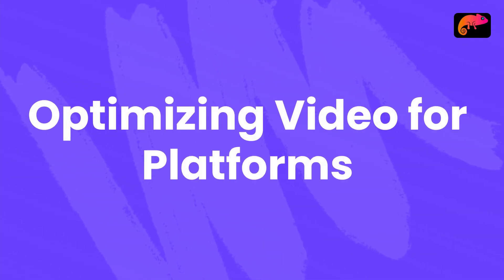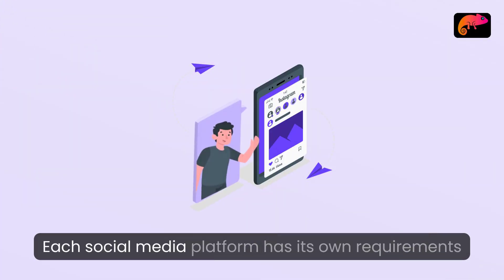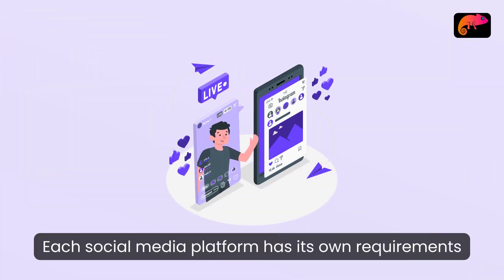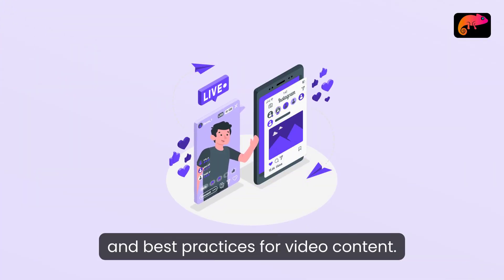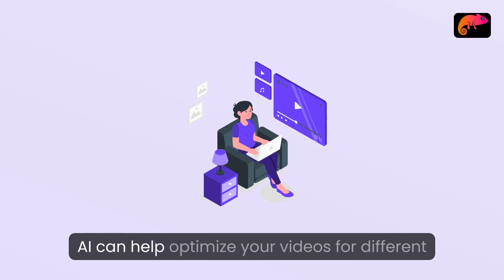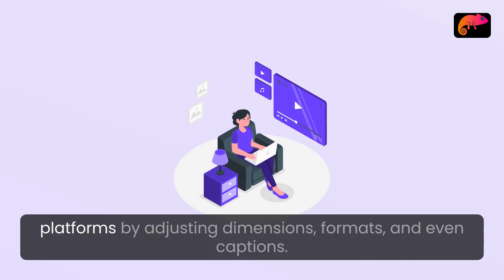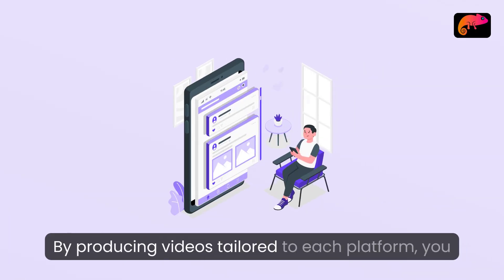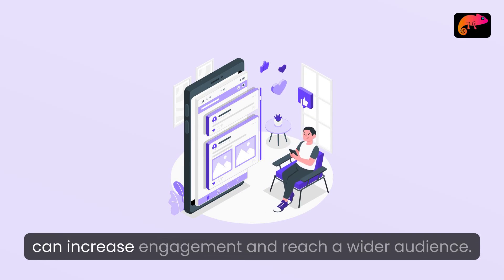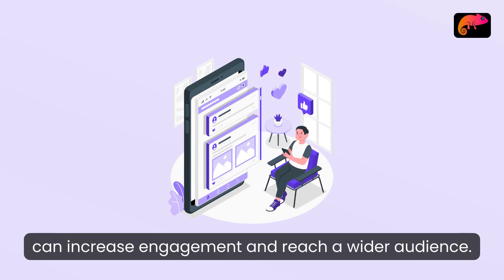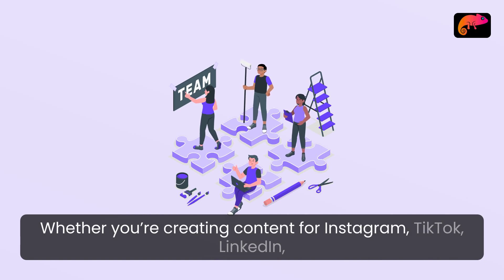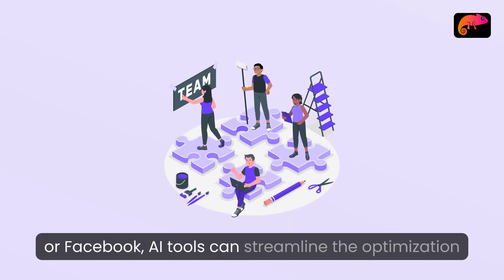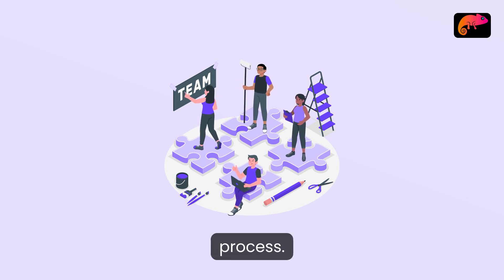Optimizing Video for Platforms. Each social media platform has its own requirements and best practices for video content. AI can help optimize your videos for different platforms by adjusting dimensions, formats, and even captions. By producing videos tailored to each platform, you can increase engagement and reach a wider audience. Whether you're creating content for Instagram, TikTok, LinkedIn, or Facebook, AI tools can streamline the optimization process.